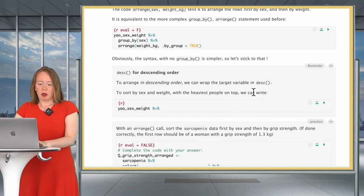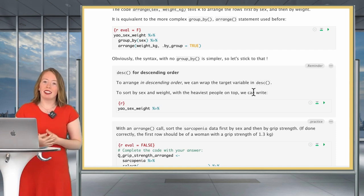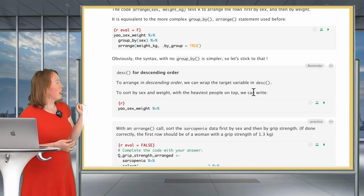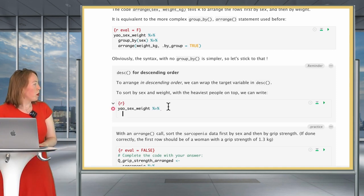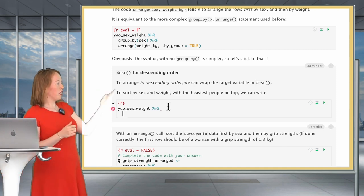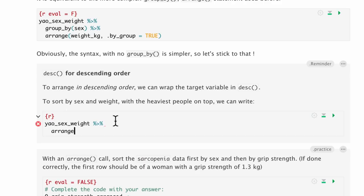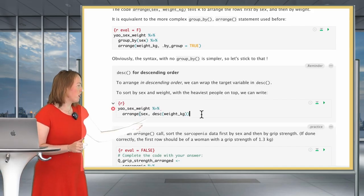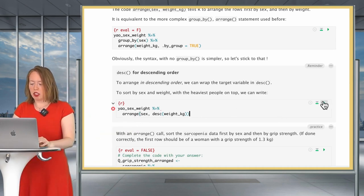However, one thing that you may have already noticed if you've been playing around with arrange is that arrange can actually group automatically. So you may not even have to use this argument to reflect the grouping. You can simply directly put inside arrange the two different variables. Let's see what this means in the code. We could also write arrange(sex, weight_kilogram). When we do so, we see that we get exactly the same output as when we were first grouping by sex and then arranging by weight, taking into account the grouping. Arrange does this already by itself.